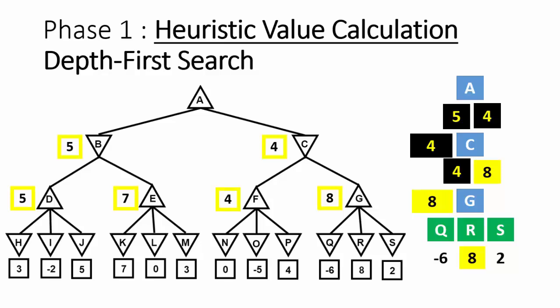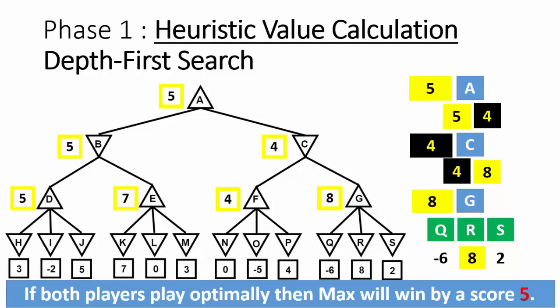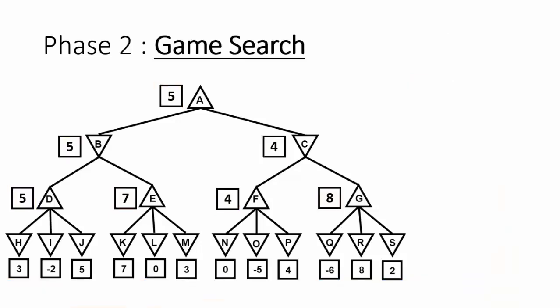After calculating the heuristic values for all children of the root node A, we calculate the heuristic value of node A. Because node A is a Max player, it selects the maximum score of its children, which is 5. Node A is replaced by 5. We have now calculated heuristic values for all nodes in the tree. The meaning of the heuristic value of 5 at root node A is that if both players play optimally, the Max player will win by a score of 5. This concludes the first phase of Minimax game search; we now proceed to the second phase, which is searching the tree.